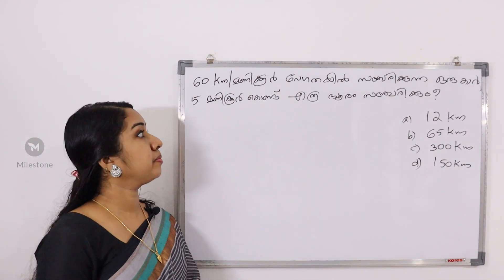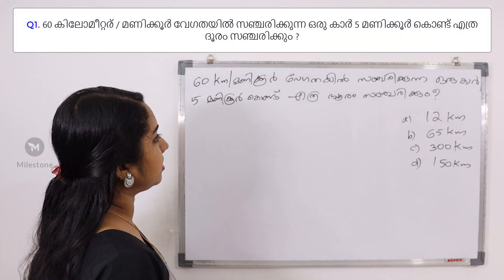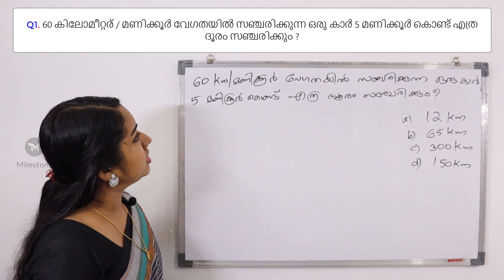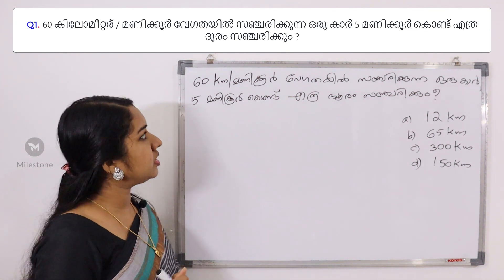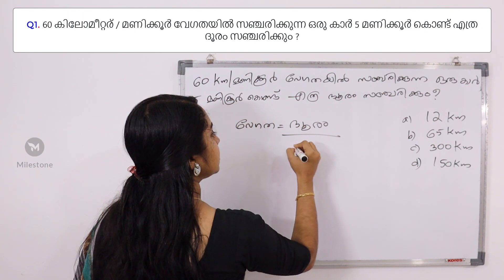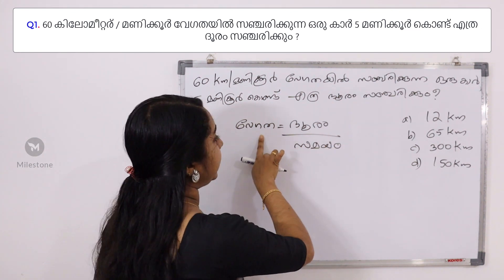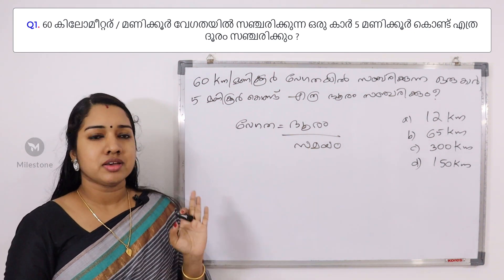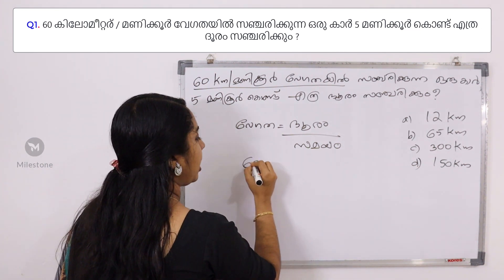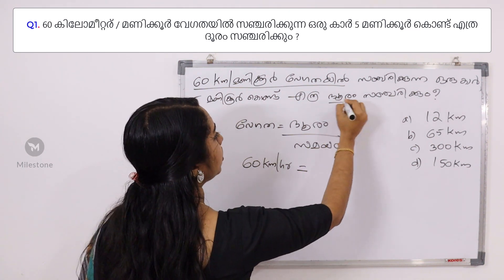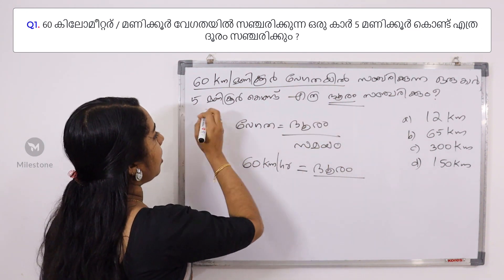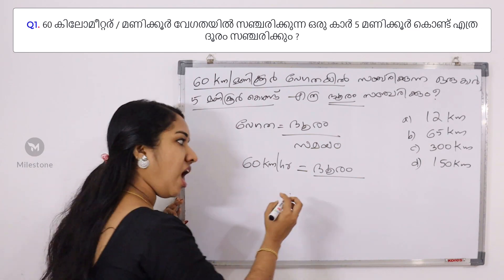First question. How long will it be? I will tell you how long it will be. Speed formula is distance by time. How long will it be? 60 km per hour. How long will it be? 5 hours.